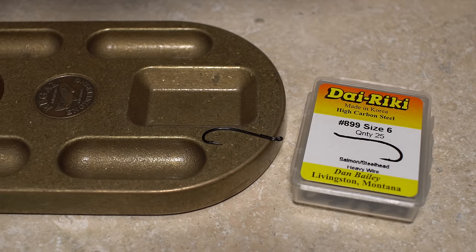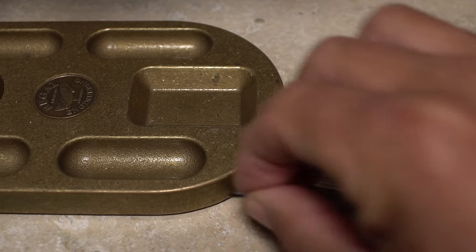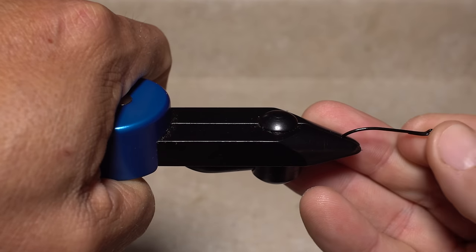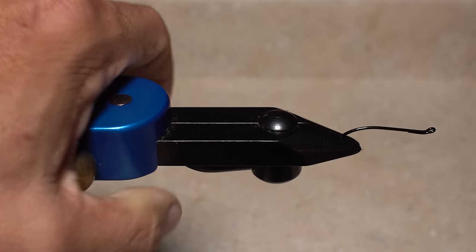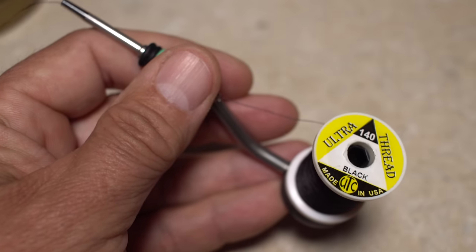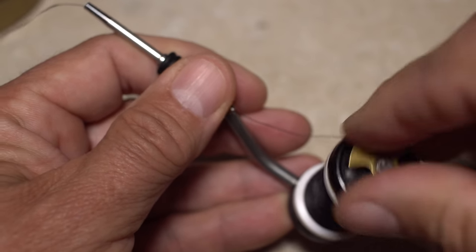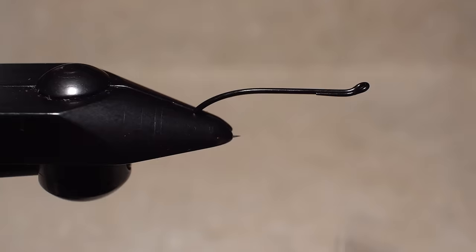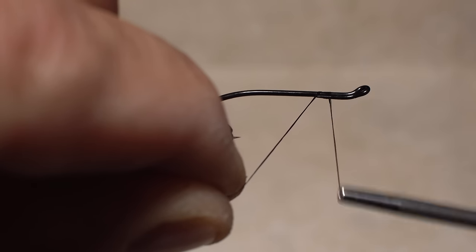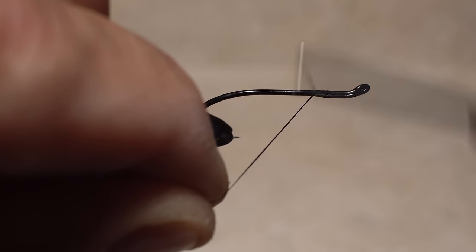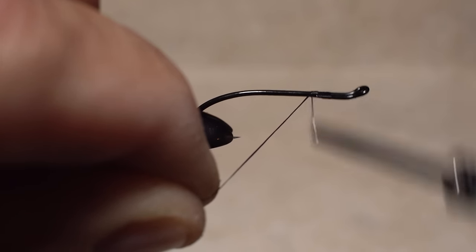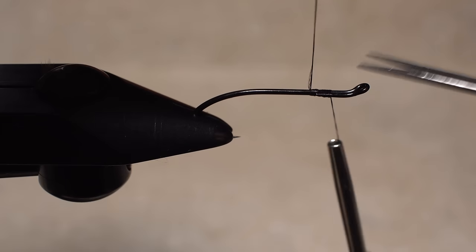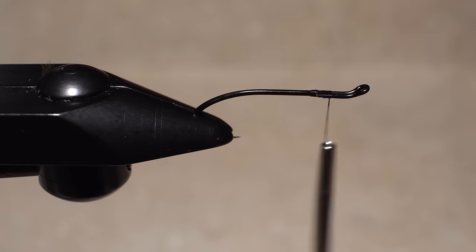For a hook I like a Daiichi number 899 in a size 6. Start by getting the hook firmly secured in the jaws of your tying vise. There's no reason not to use heavier thread on this pattern so I've loaded a bobbin with a spool of black UTC 140 denier. Start your thread on the hook shank about halfway down the return from the eye and take wraps rearward past the end of the return and then back up to the original starting point. You can then snip the excess tag end of thread off close.